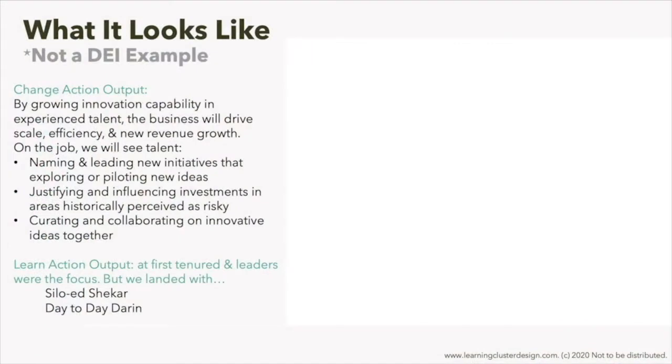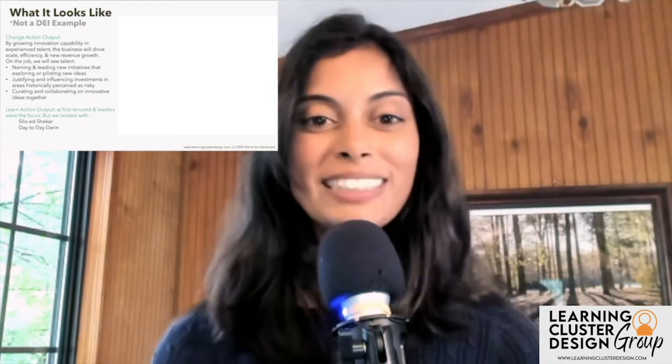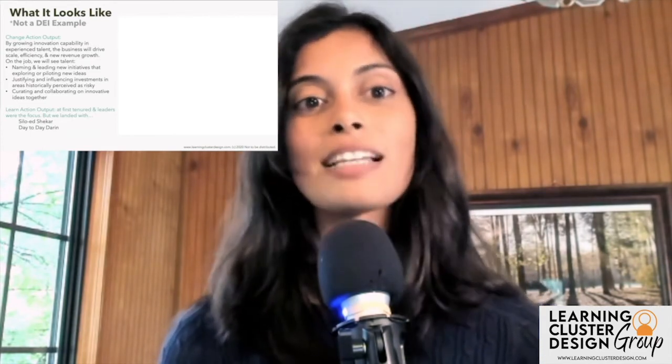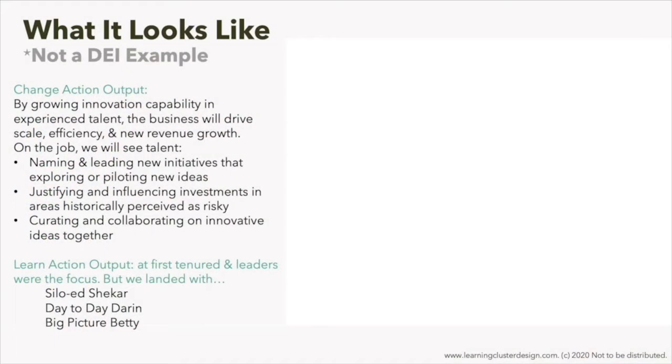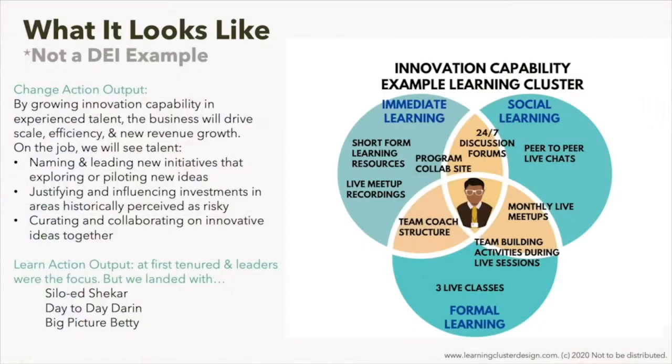Day-to-day Darren was a manager — and note that these are personas, so I'm describing a generic story. Day-to-day Darren was really focused on day-to-day fires and always got stuck in the tactical pieces, as we often see managers do. He didn't have the capacity to work on the strategic pieces that would lead to those innovative sparks. Then we had a third persona called Big Picture Betty — someone who was almost a champion or role model for innovation capability, with cross-company networks, constantly focusing on the big picture, sometimes at the expense of day-to-day tactical work.